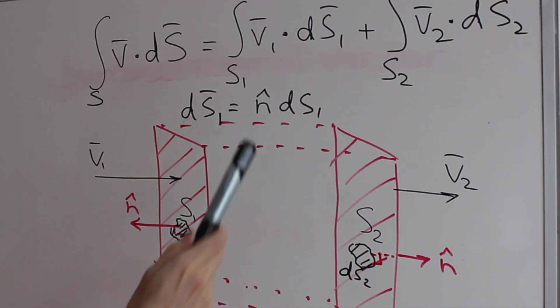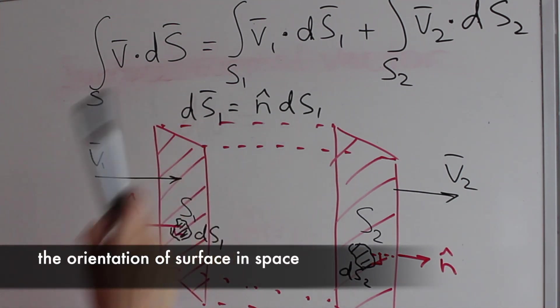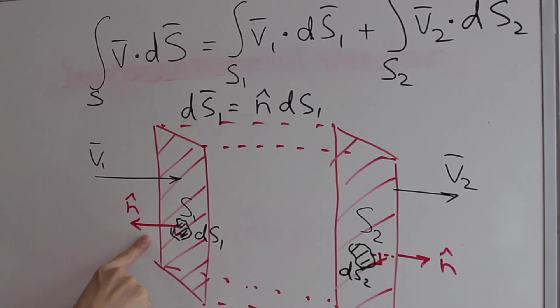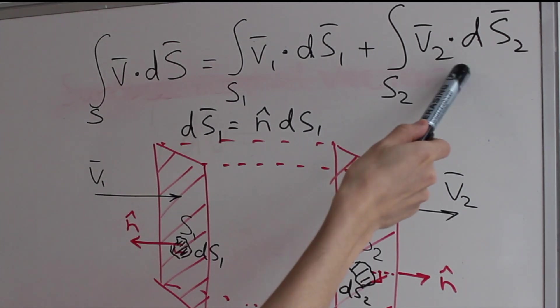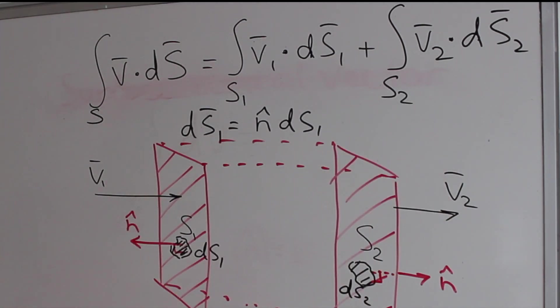So instead of ds1 vector we can write n hat times the surface ds1. Why? Because the surface normal vector n hat defines the surface. So anything on this surface will be defined by normal vector n hat because it will always be perpendicular to all the points of the surface. So for a little part of the surface s1 which is called ds1 we also have the normal vector n hat. And we can define ds2 the same way.